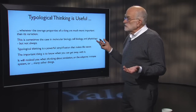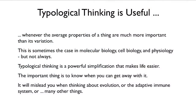Those conditions are ones where the average properties of a thing are much more important than its variation. That's sometimes the case in molecular and cell biology and physiology, but not always. It is a powerful simplification that makes life easier — you can deal with the world efficiently by making it less complex. The important thing is to know when you can get away with it. Typological thinking will mislead you when thinking about evolution, the adaptive immune system, or many other things whose basic mechanism is based on variation.